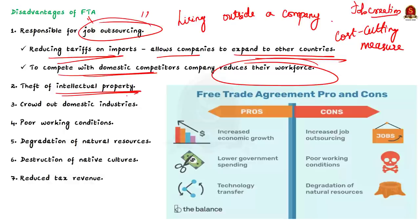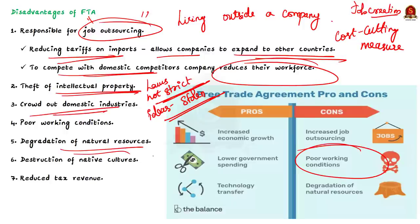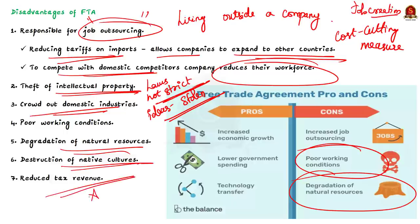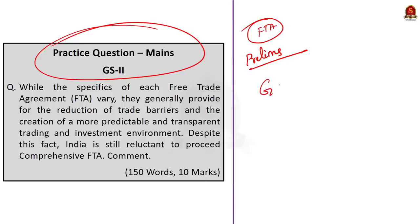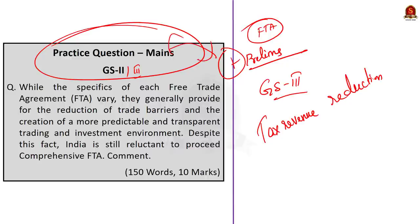The second issue is theft of intellectual property. Many developing countries don't have laws to protect patents, inventions and new processes, and the laws they have aren't always strictly enforced. As a result, corporations often have their ideas stolen and must compete with lower-priced domestic knockoffs. Other disadvantages include crowding out of domestic industries, poor working conditions, degradation of natural resources, destruction of native cultures, and reduced tax revenue. These points are useful for both preliminary questions and GS Paper 3 mains answers.